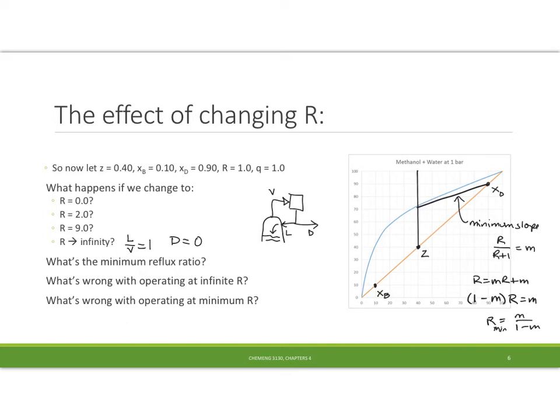So what's wrong with operating at the minimum reflux ratio? Well, let's just try drawing in steps here. So we'll come across and down, across and down, across and down. Besides the fact that I'm getting a lot of steps, at some point I come in here and I pinch and I get infinitely many steps as I come into that pinch point. This is called a pinch point.